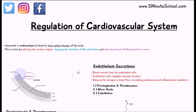Today's video will be talking about the regulation of the cardiovascular system. We're going to talk about how certain substances produced by the endothelial cells of the vessels affect the flow of blood. The endothelial cells are located in the inner lining of the vessel — this is the lumen, most likely of an arteriole — and these endothelial cells are in direct contact with blood.